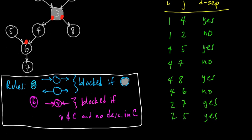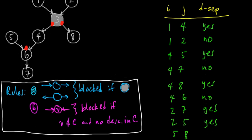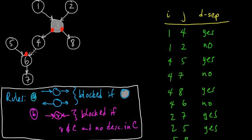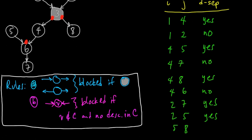Let's do one more: 5 and 8. That path would have to go through this stop sign and these, so it's clearly blocked — yes, d-separated. So that was amazing — we were able to immediately read off these conditional independence properties just from the graph.